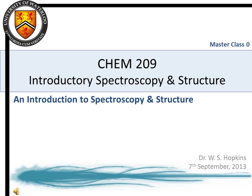Welcome to the Chemistry 209 Masterclass series. This series of lectures is intended to highlight the key concepts of introductory spectroscopy and structure. These masterclasses should be used as a study aid and not as a replacement for the 36 regular lectures scheduled for Chemistry 209. This lecture, Masterclass 0, provides an overview of Chemistry 209. The material presented here will be discussed in much more detail in subsequent masterclasses.